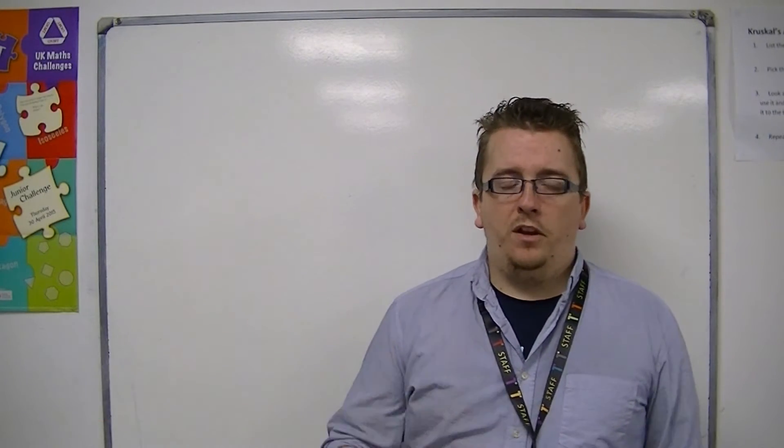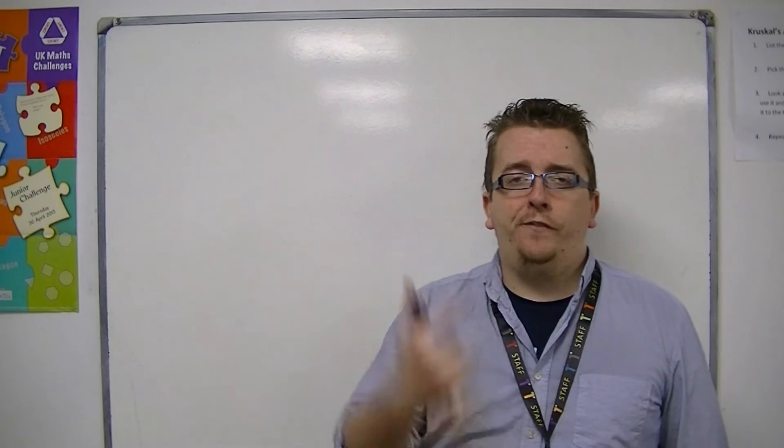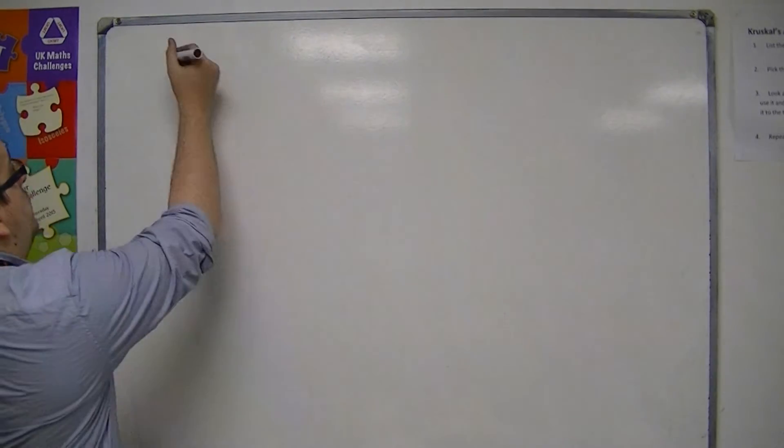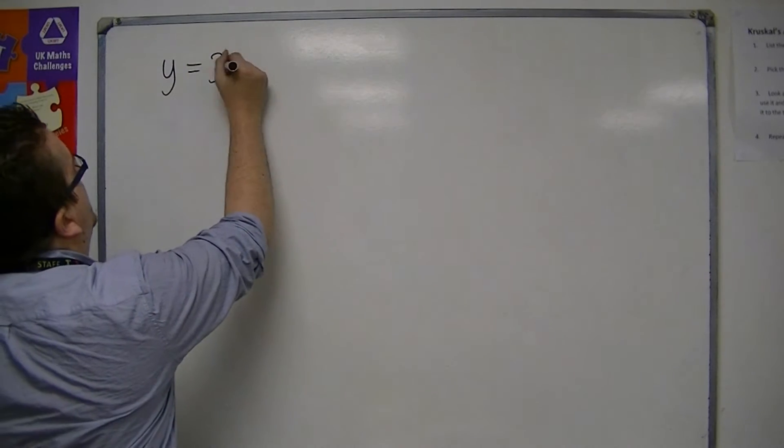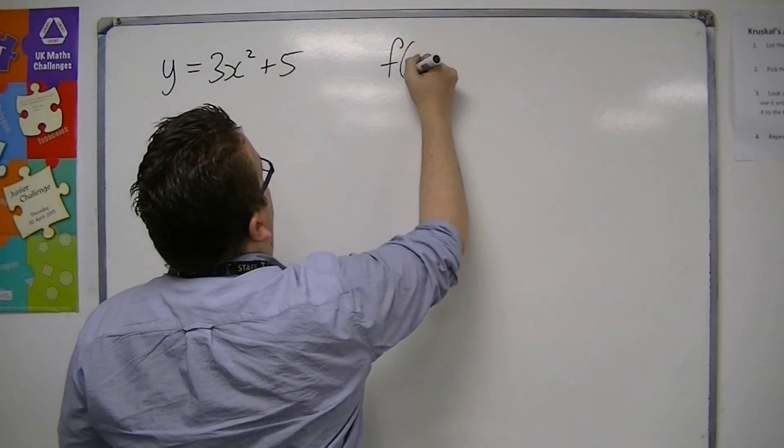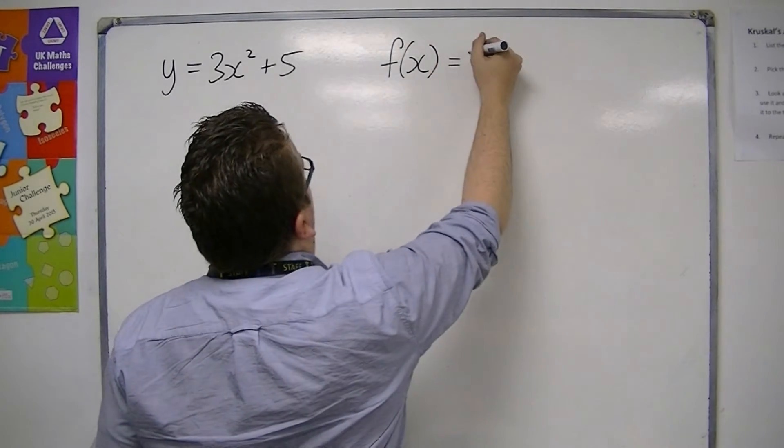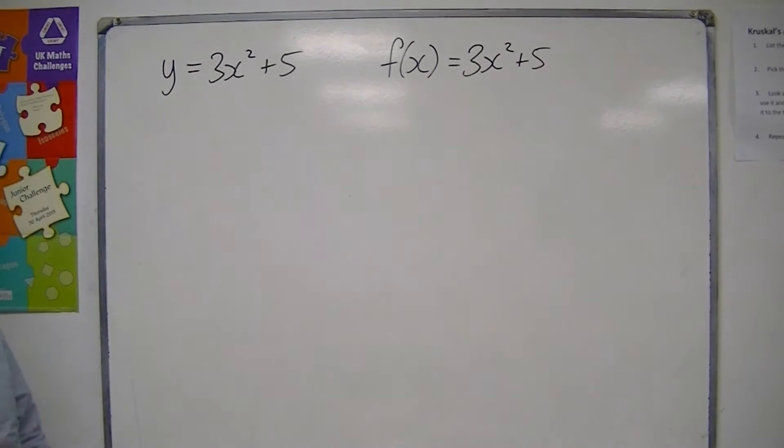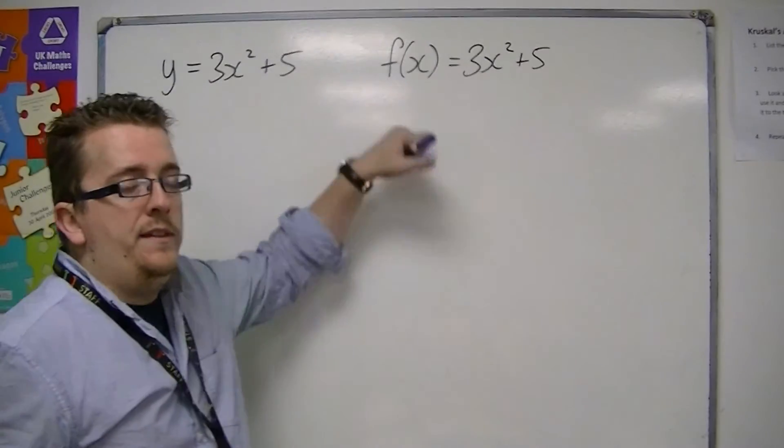When we're looking at polynomials, I introduced function notation. So we know that instead of writing y = 3x² + 5, I could also write this as f(x) = 3x² + 5, if I want to give that function a specific name, so f in this case.